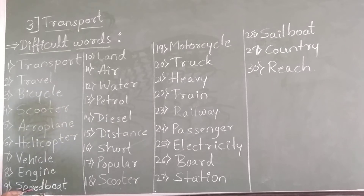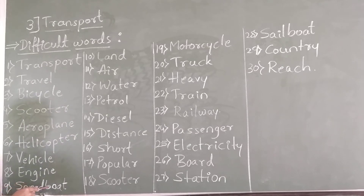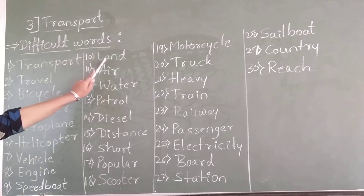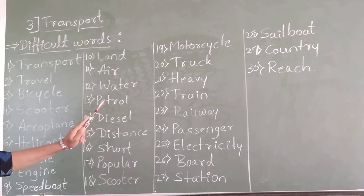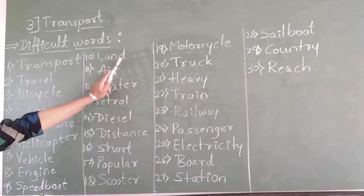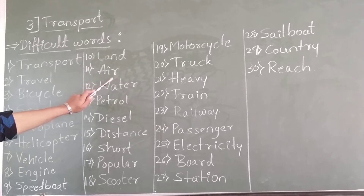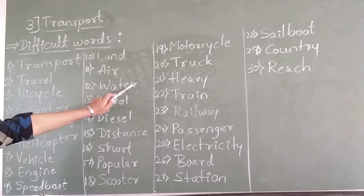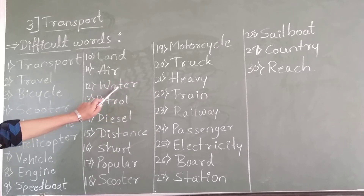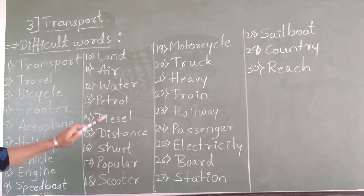S-P-E-E-D-B-O-A-T — speedboat. L-A-N-D — land. A-I-R — air. W-A-T-E-R — water.